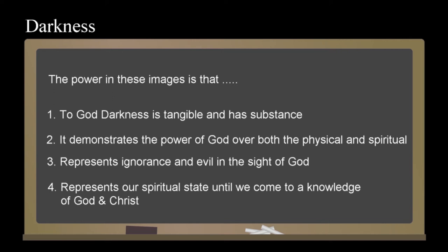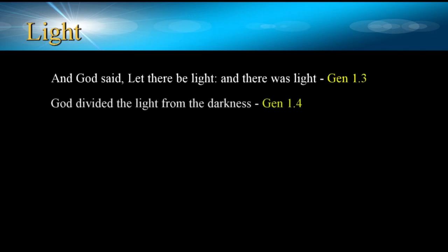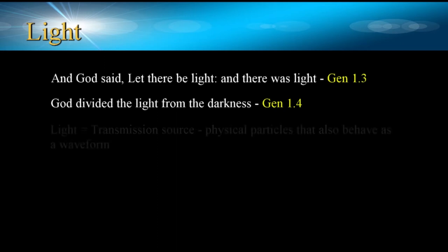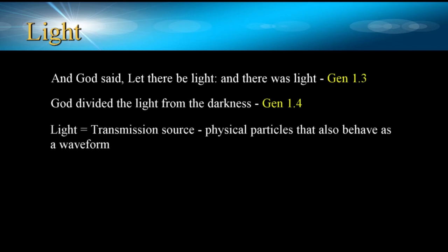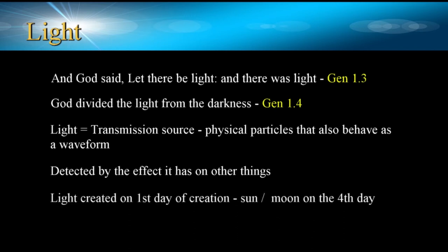Closely related to this is the image of light. While darkness was the state of the world on the first day of creation, the first thing God did was to create light in Genesis 1:3, which was then divided from darkness in Genesis 1:4. The presence of this light was perhaps not what we think of today. We understand that light is a phenomenon which is present but not directly observable, emitted by a transmission source and composed of things that behave as physical particles and a waveform. We detect light by the effect it has on other things, so we can't see light itself, but we can perceive the byproduct of its presence. The light mentioned on the first day of creation wasn't the light of the sun or moon, as these were created on the fourth day.